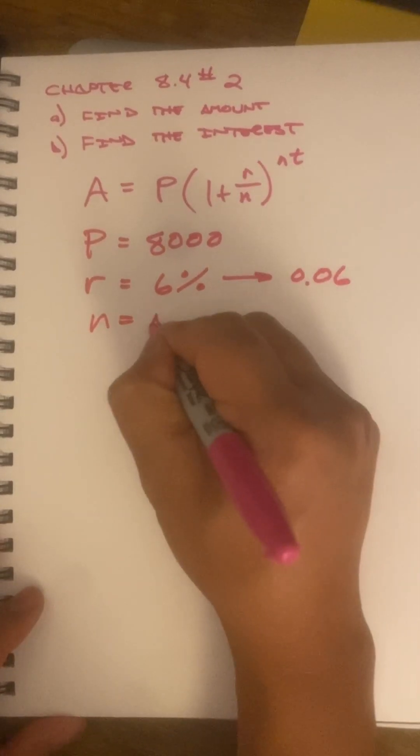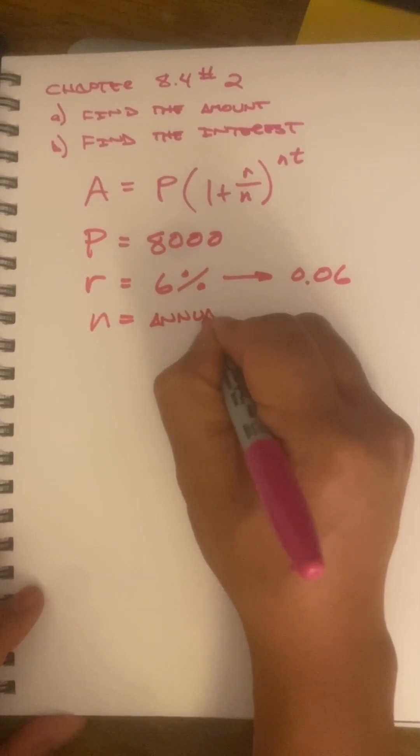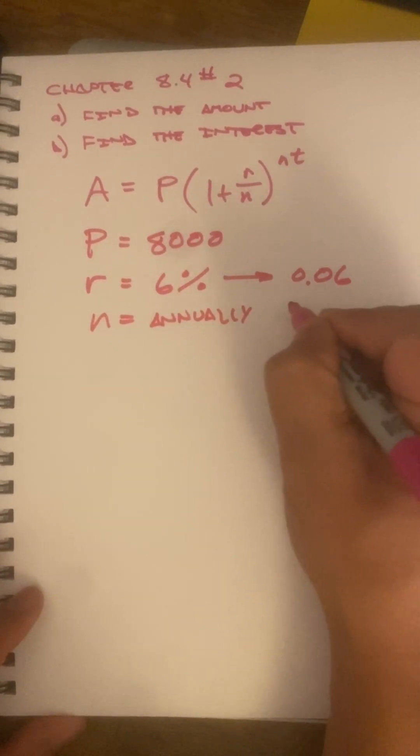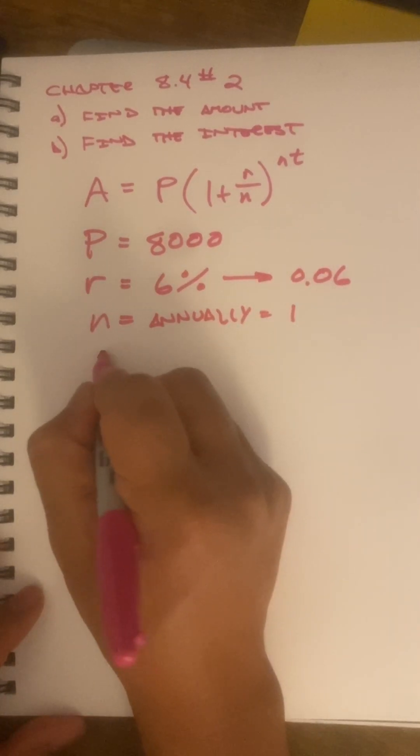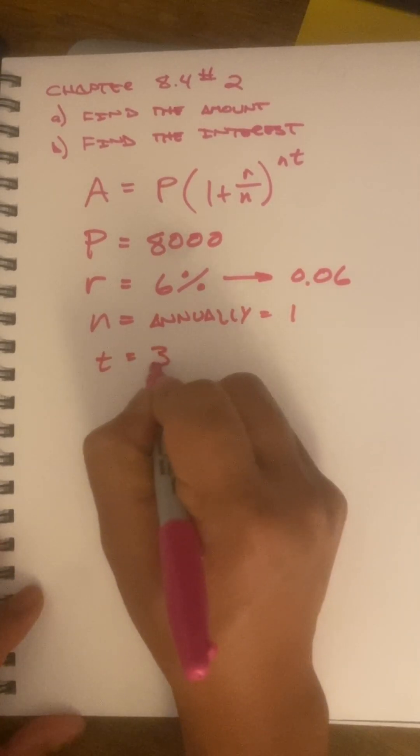The rate equals 6%. I'm going to change that to 0.06 right off the bat. And it says the word annually. When you hear that, annually is one time a year.